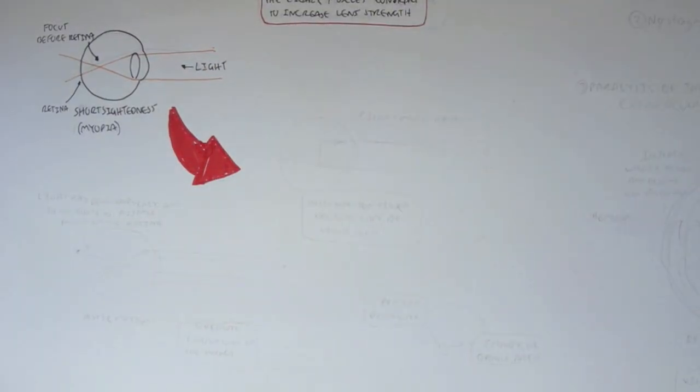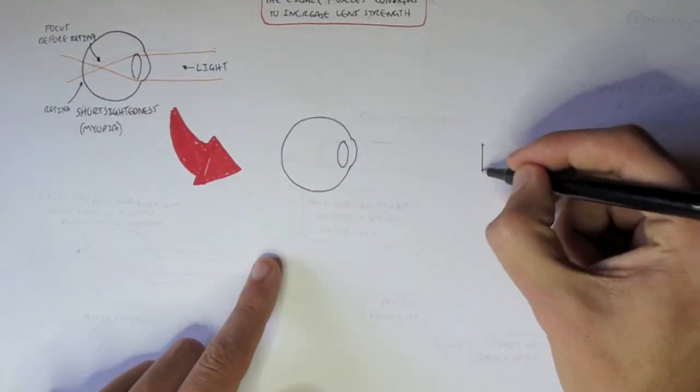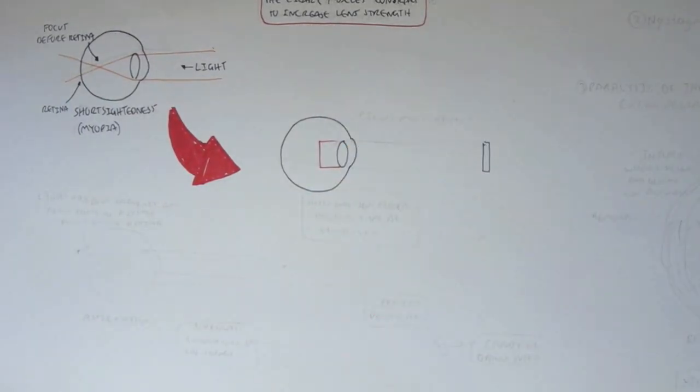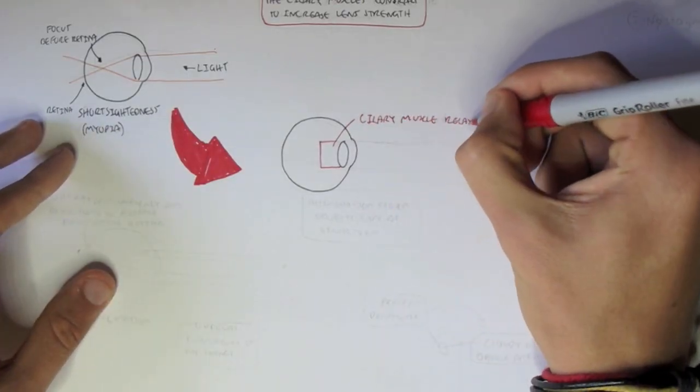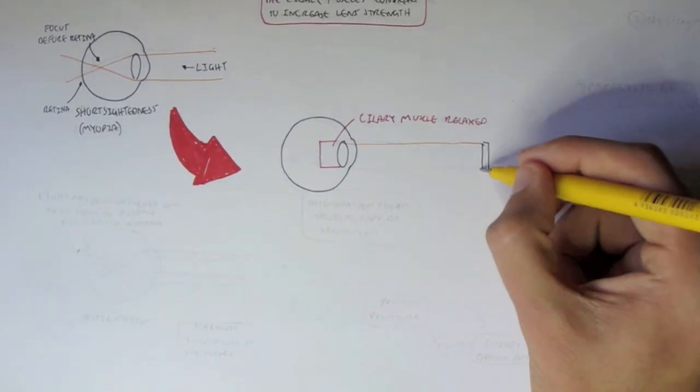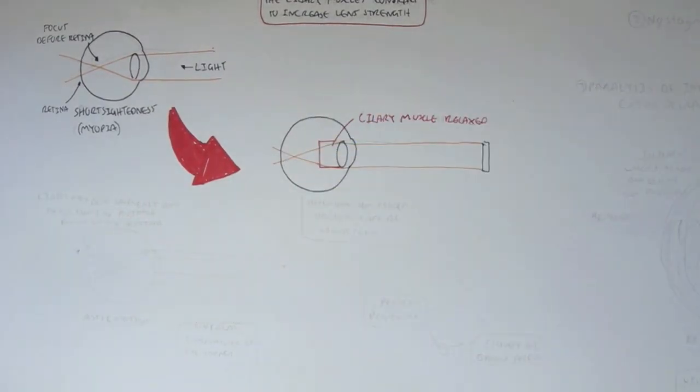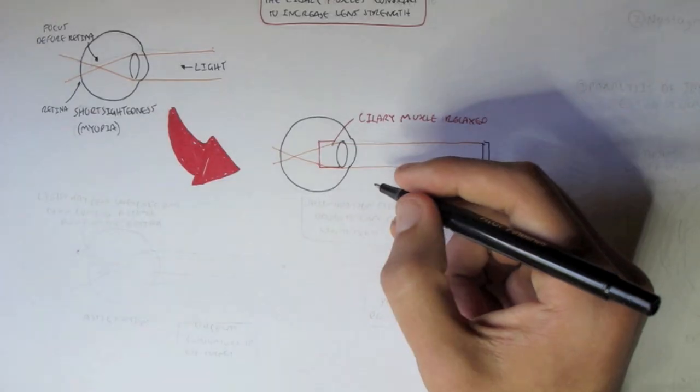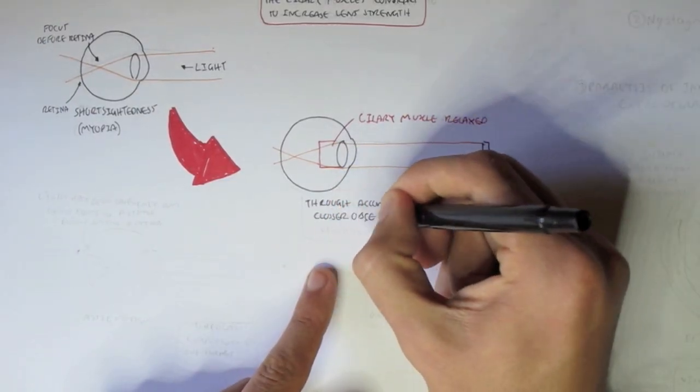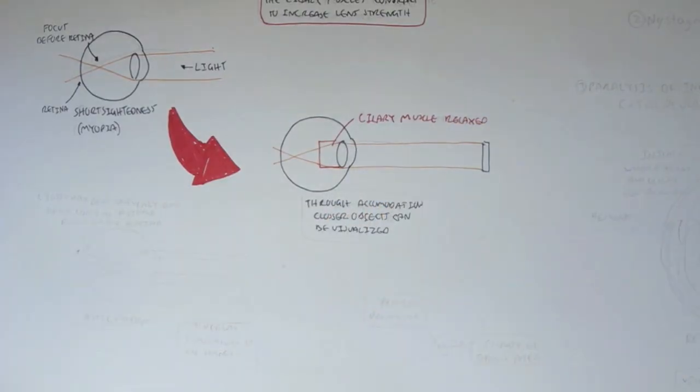Next, let's look at myopia. And myopia is a condition where objects far away cannot be seen properly. Because when the ciliary muscles are relaxed, the light reflecting off the object does not focus properly on the retina. However, through accommodation with the lens and ciliary muscles, closer objects can be easily visualized.